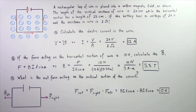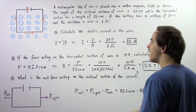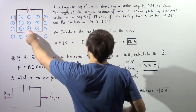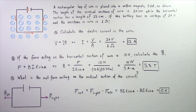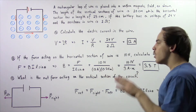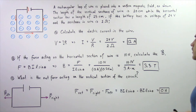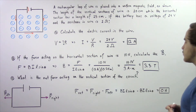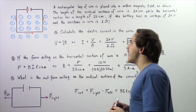In part A, calculate the electric current in the wire. In part B, if the force acting on the horizontal section of the wire is 10 newtons, calculate the magnitude of our magnetic field B. In part C, what is the net force acting on the vertical sections of our electric circuit? Let's begin with part A.